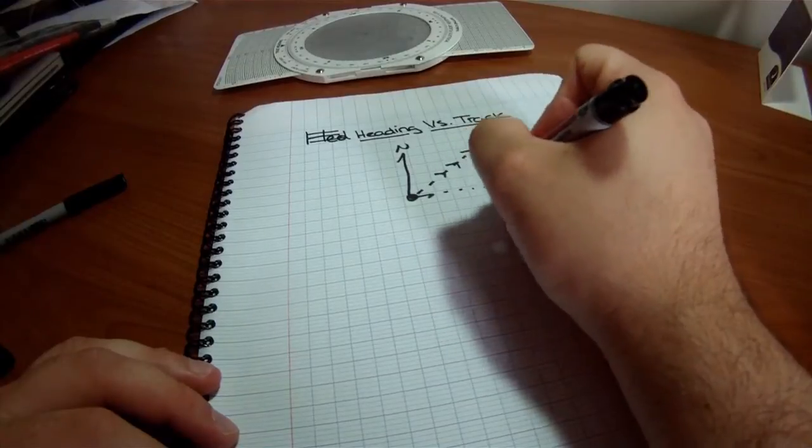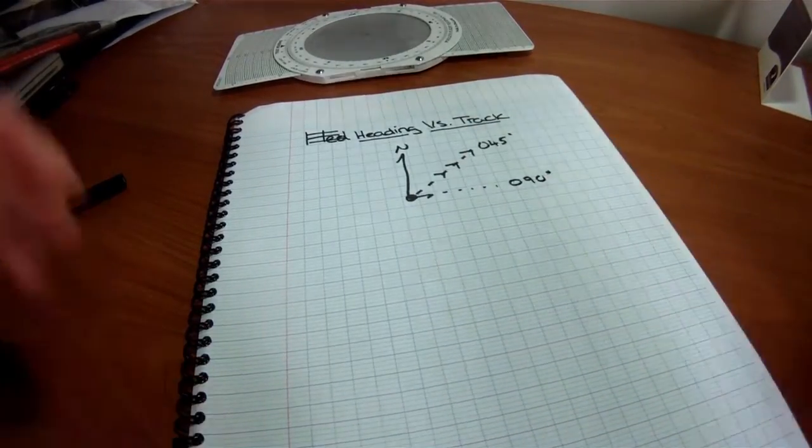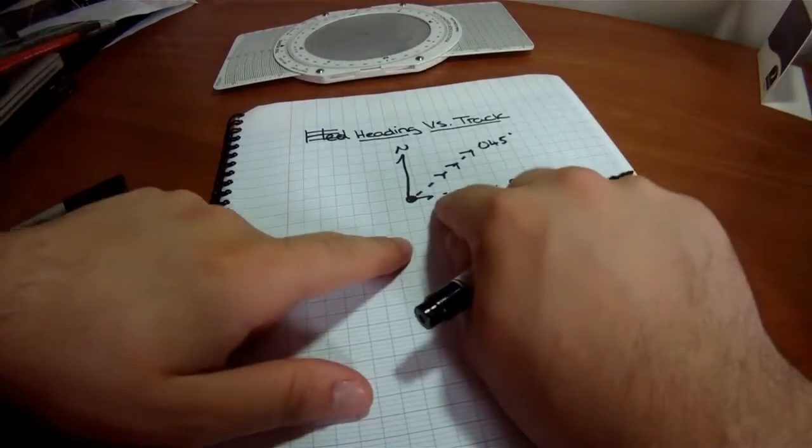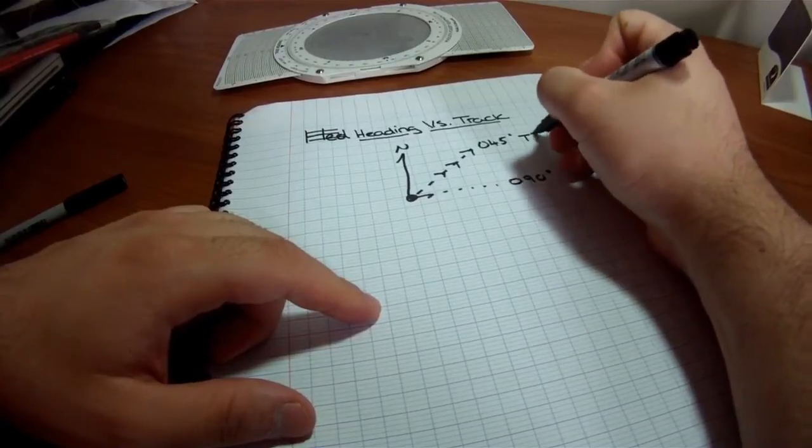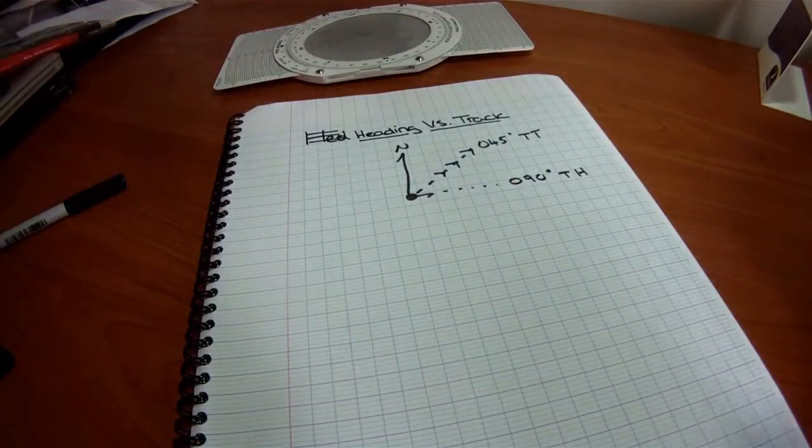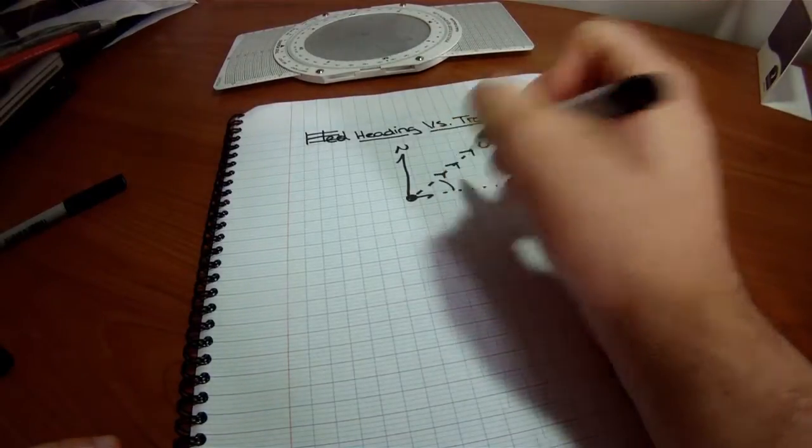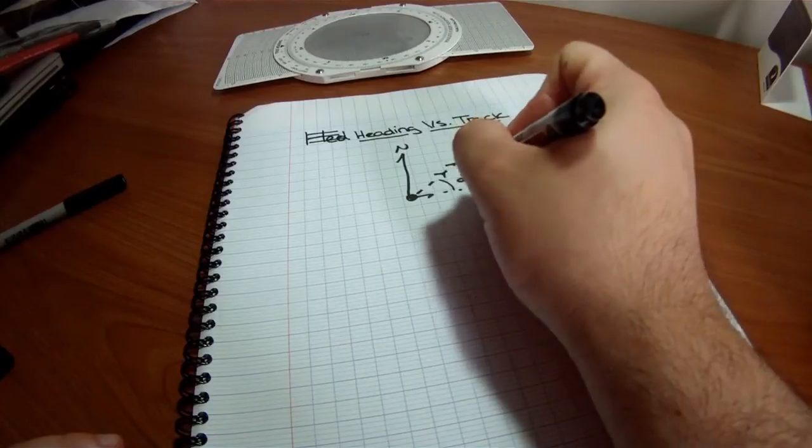It could be pointed at, let's say, 090 degrees. Now, if it's pointed at 090 degrees, that would be its actual heading. So, this is the true track, and this would be the true heading. And what you'll find is that this angle right here, this angle is what we call the drift.